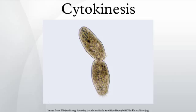In animal cells, one notable exception to the normal process of cytokinesis is oogenesis, where the ovum takes almost all the cytoplasm and organelles, leaving very little for the resulting polar bodies, which then die. Another form of mitosis without cytokinesis occurs in the liver, yielding multinucleate cells. In plant cells, a dividing structure known as the cell plate forms within the center of the cytoplasm and a new cell wall forms between the two daughter cells.